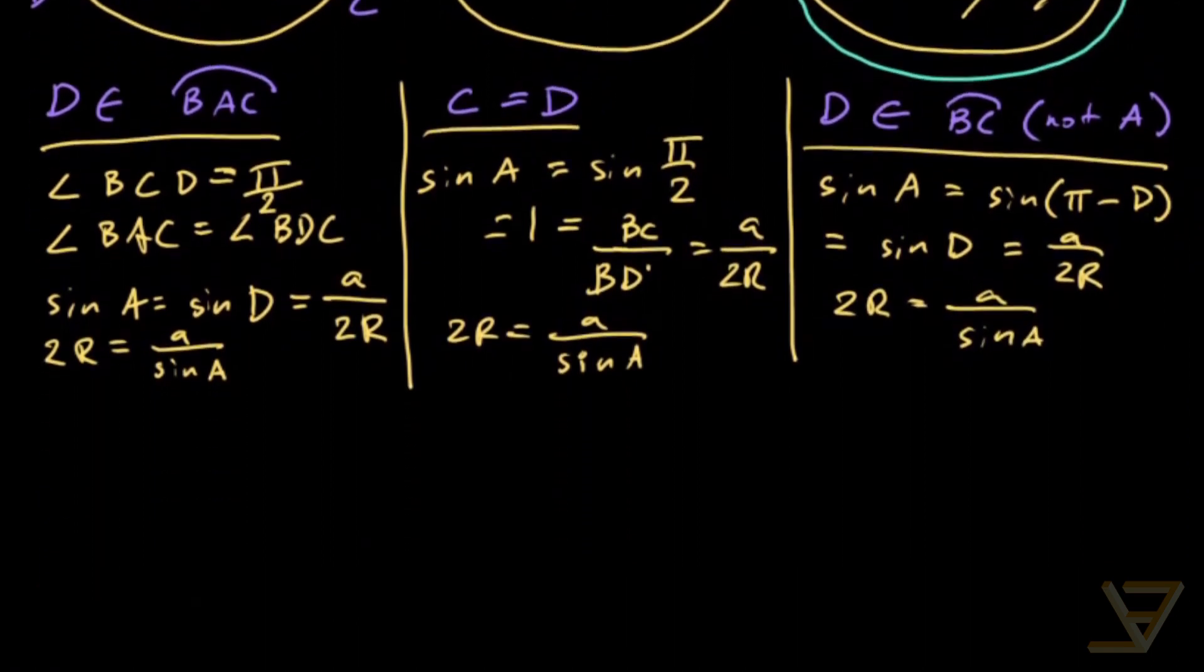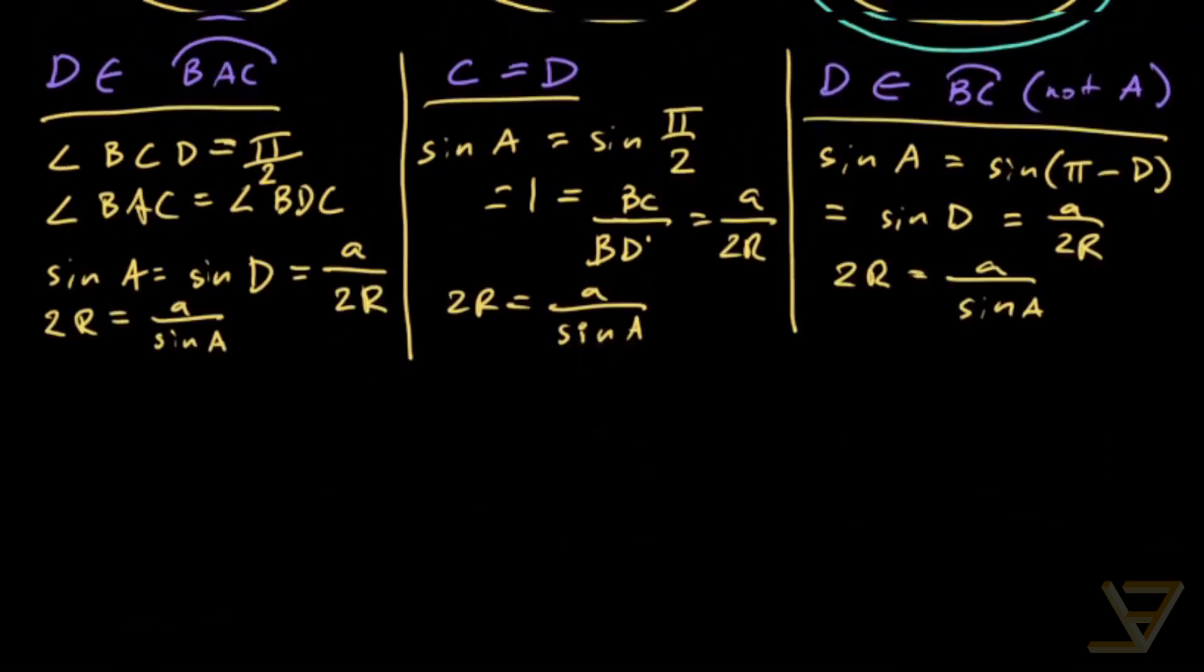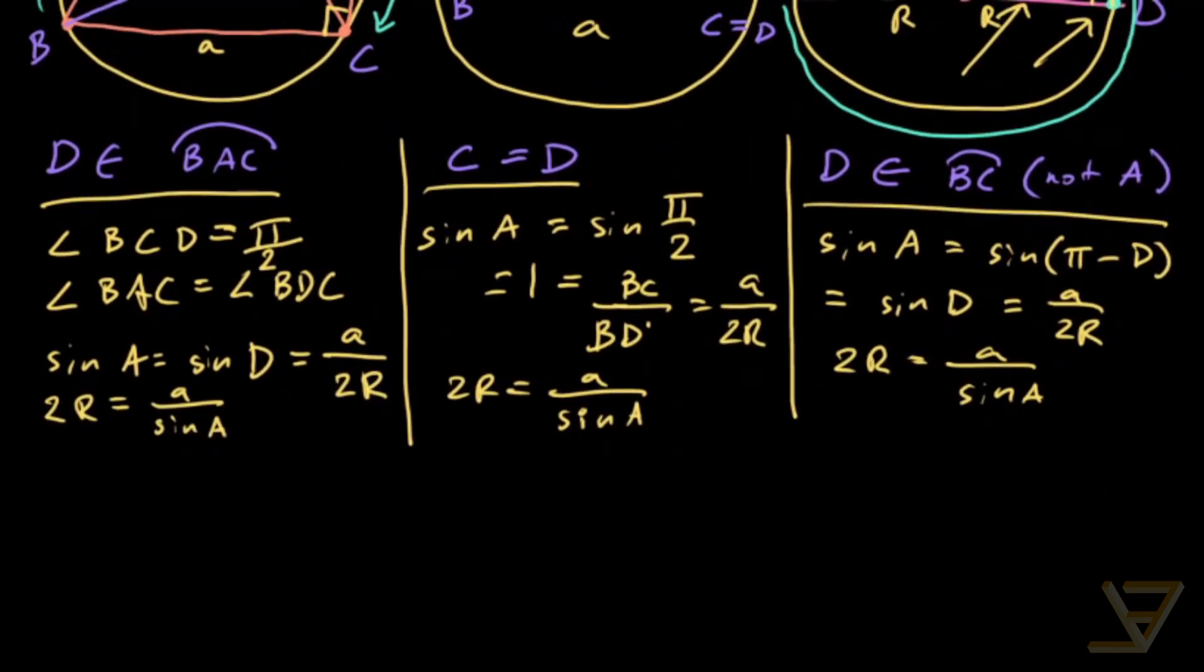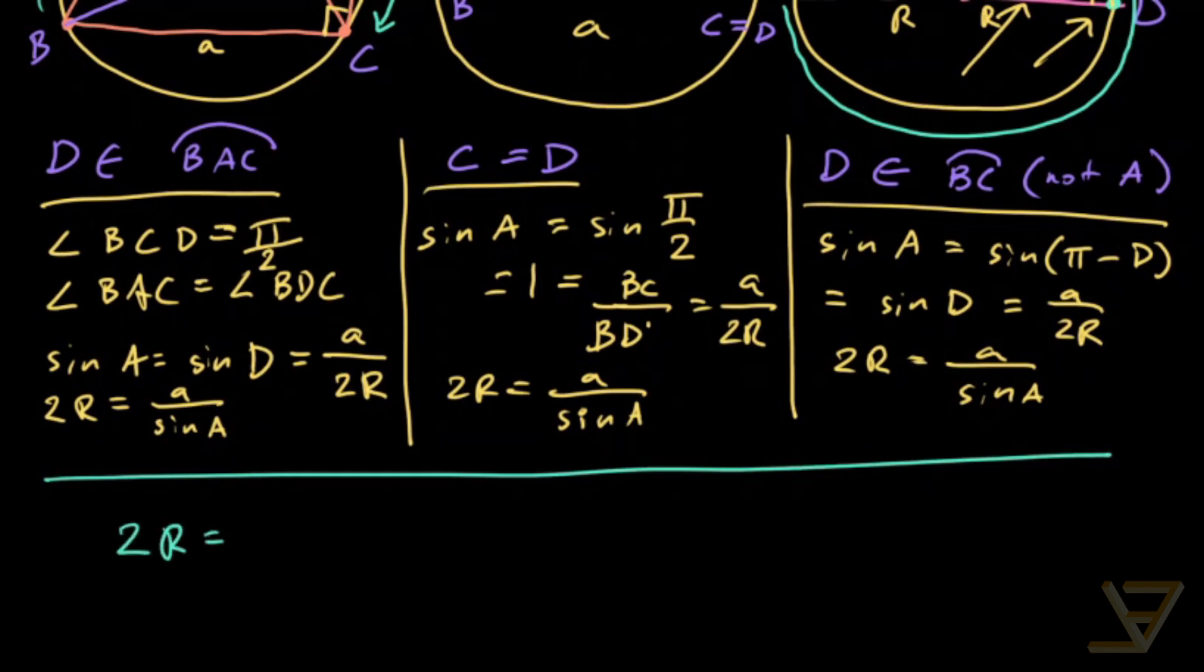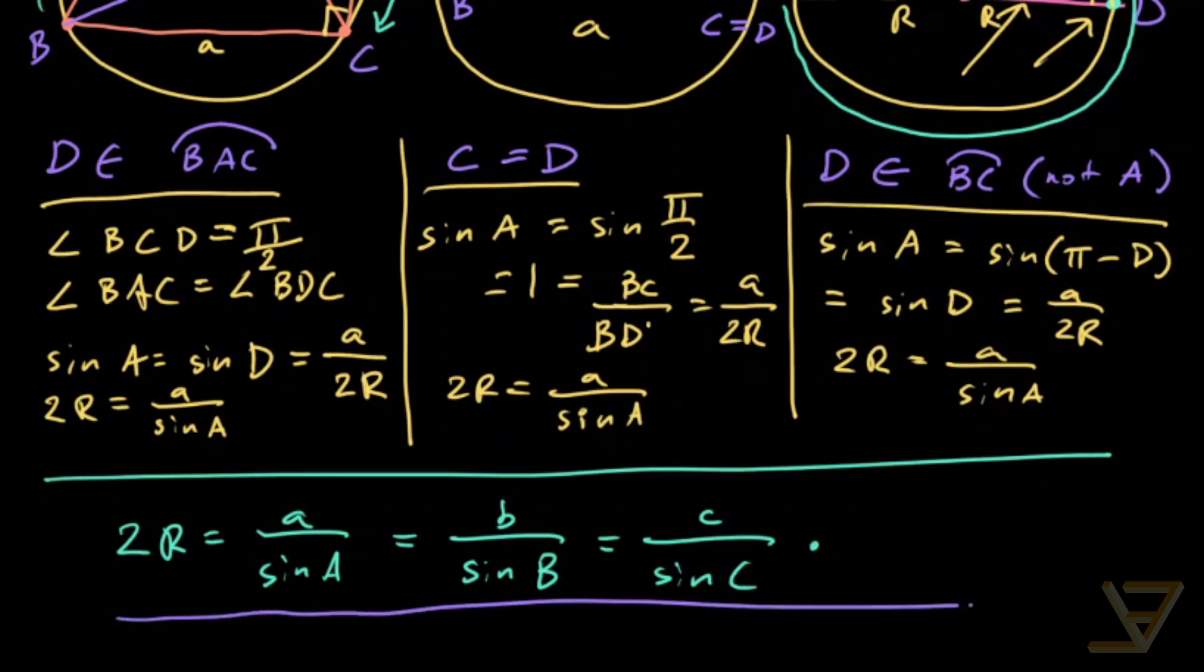So what we get is that in all three cases, 2R is equal to A over sine of A, and since there's nothing special about angle A or side A, we find that this is also symmetrically equal to B over sine of B, which is equal to C over sine of C. So that's the proof of the extended law of sines. Thank you for watching, and I'll see you next time.